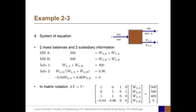This can be written in matrix notation. In this case, X contains four stream variables — all the unknowns: W2A, W2B, W3A, W3B. The coefficient matrix contains all the coefficients for these variables in the different equations. For example, the first row represents mass balance A, where the coefficient 1 is multiplied by W2A, and coefficient 1 is multiplied by W3A, corresponding to the right-hand side value of 500.